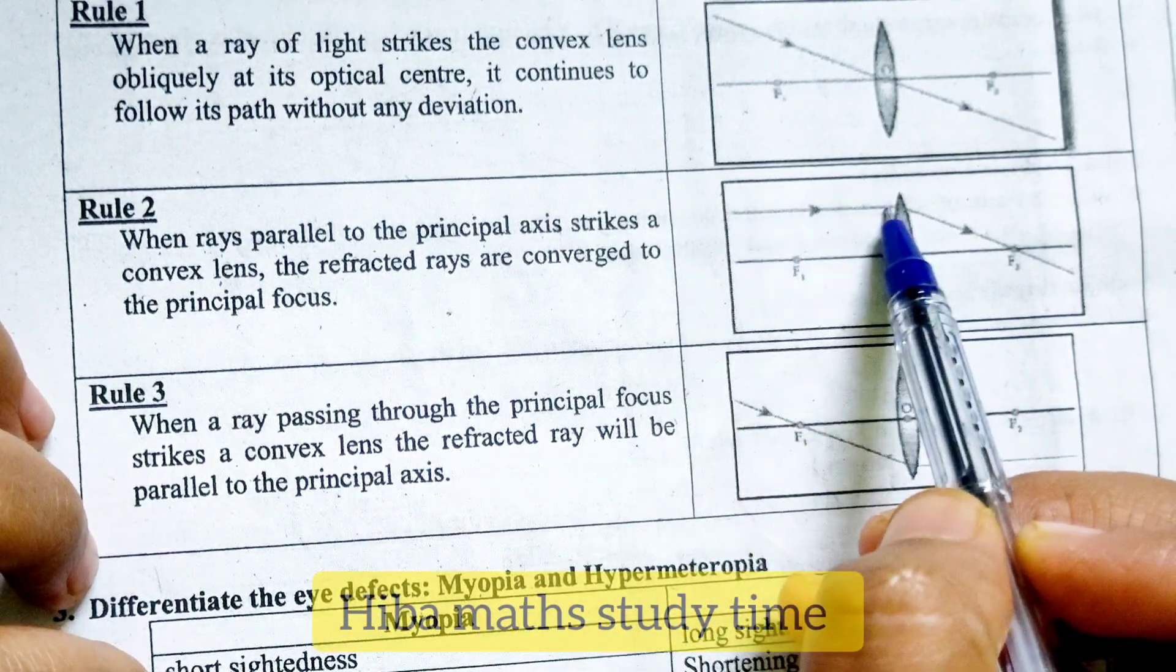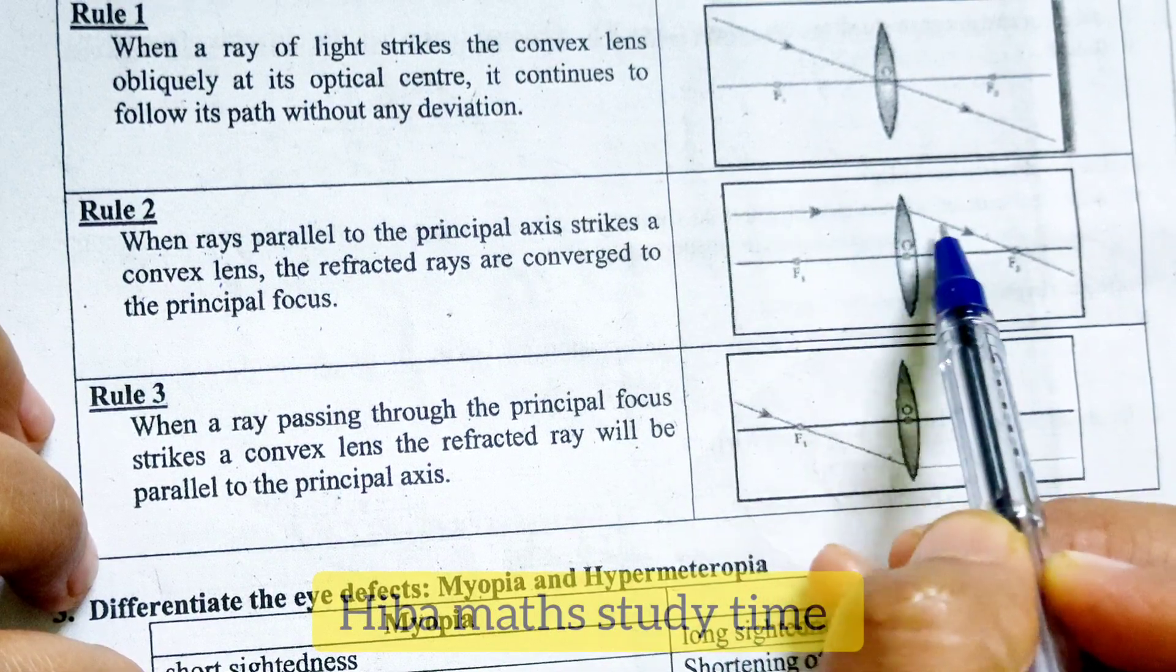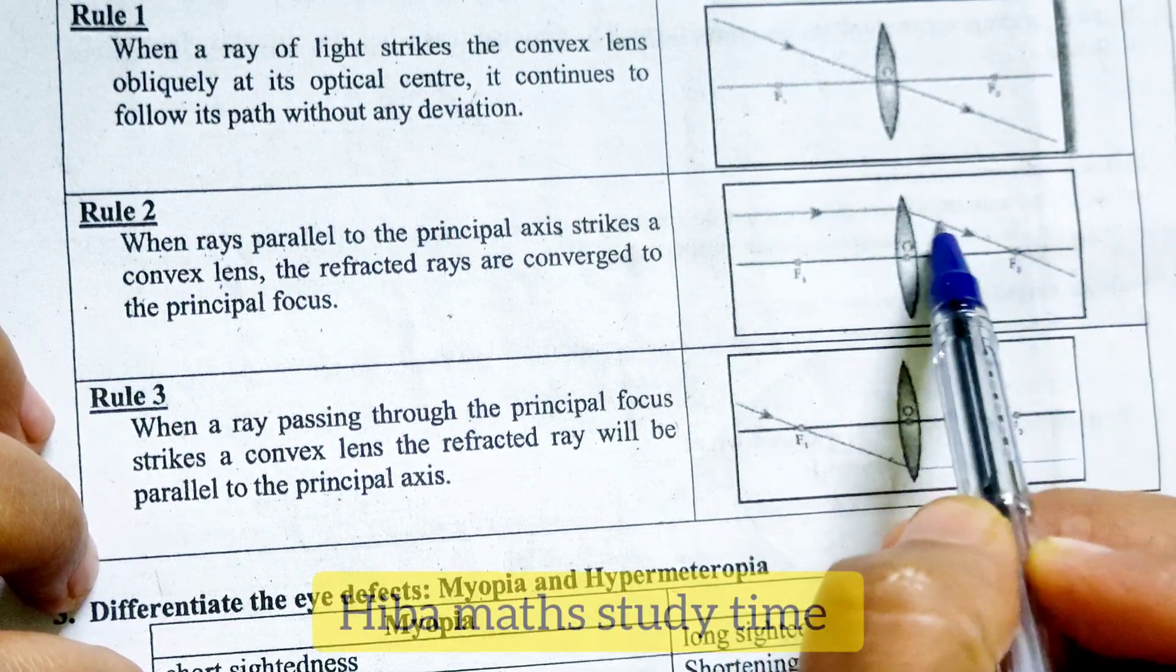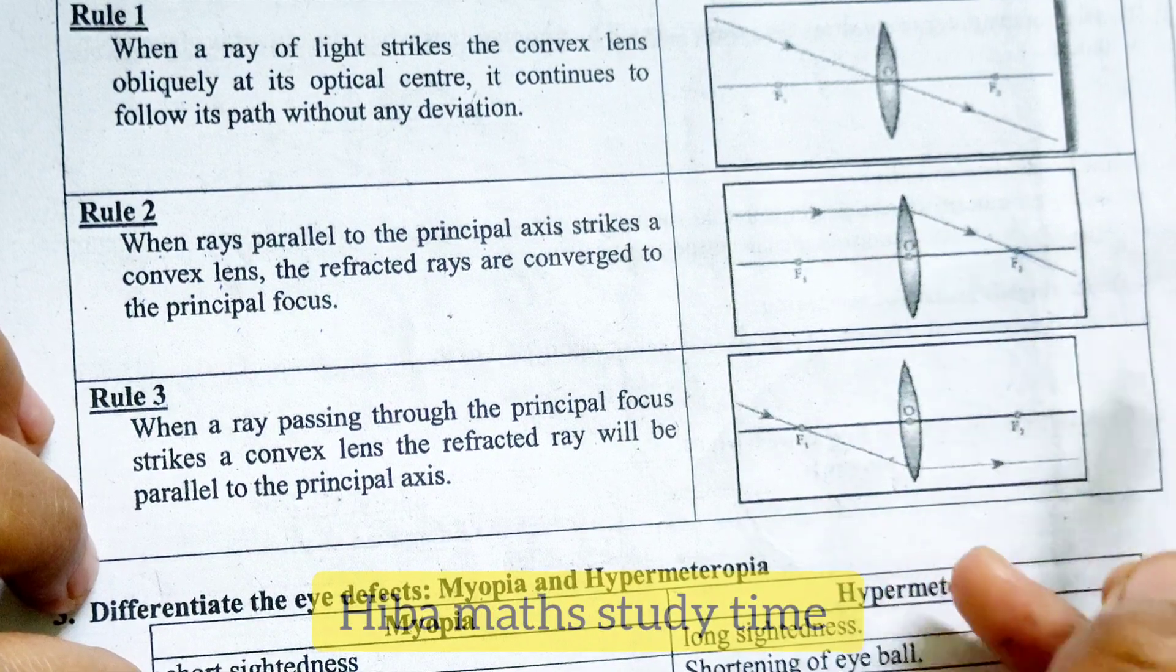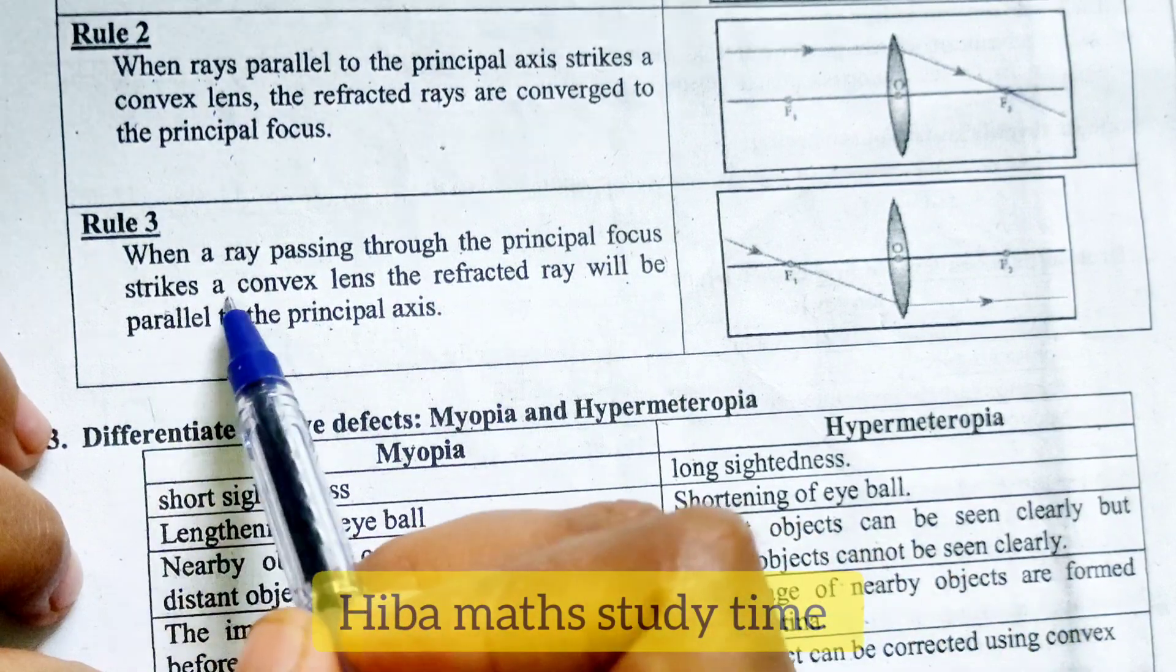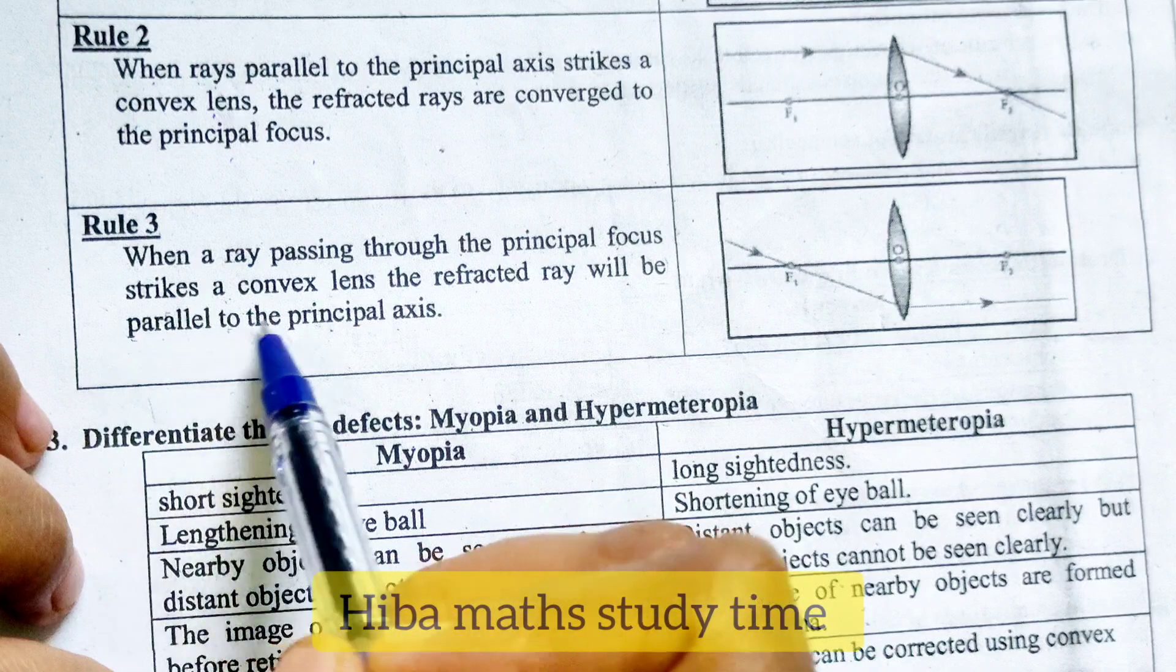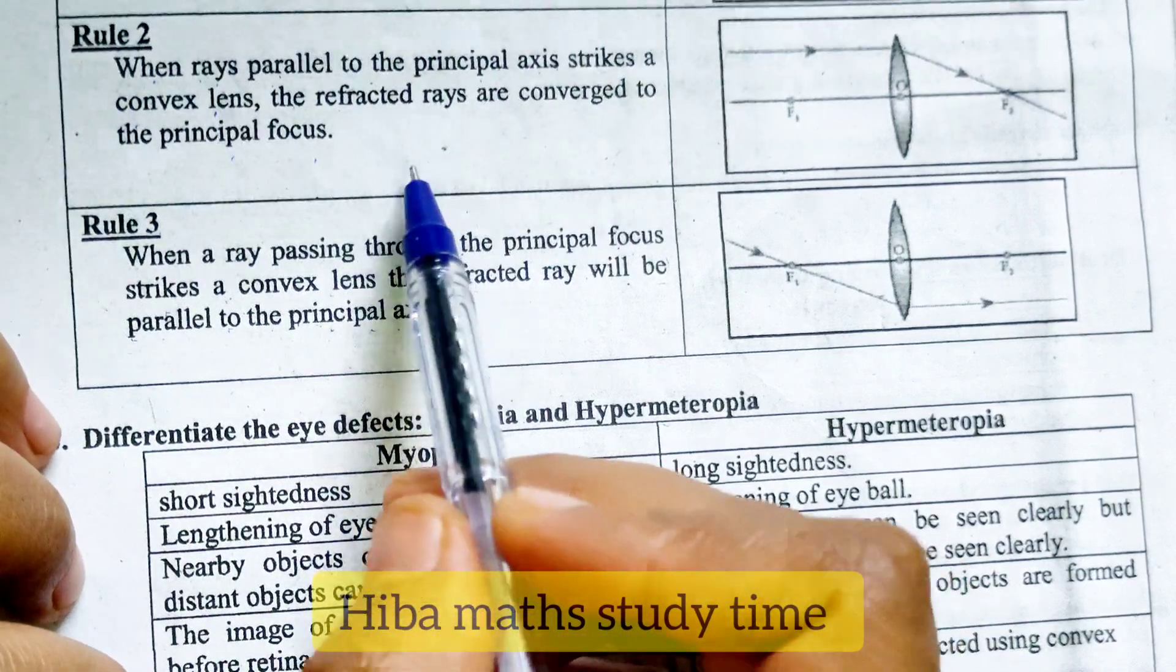Now we have to draw the line. Rule 3, when the ray is passing through a principal focus, strikes a convex lens, the refracted ray will be parallel to the principal axis. So rule 2, when it comes to reverse,